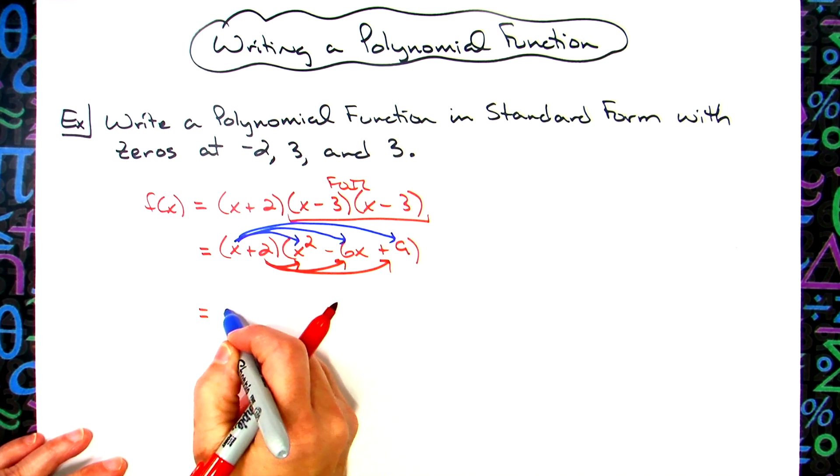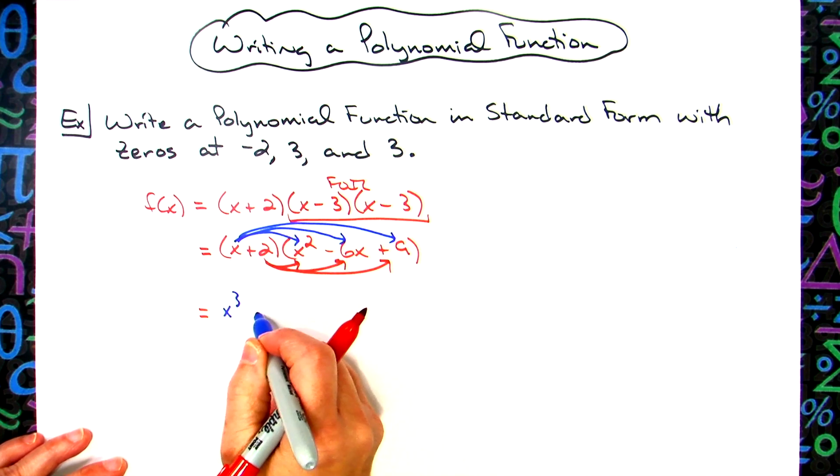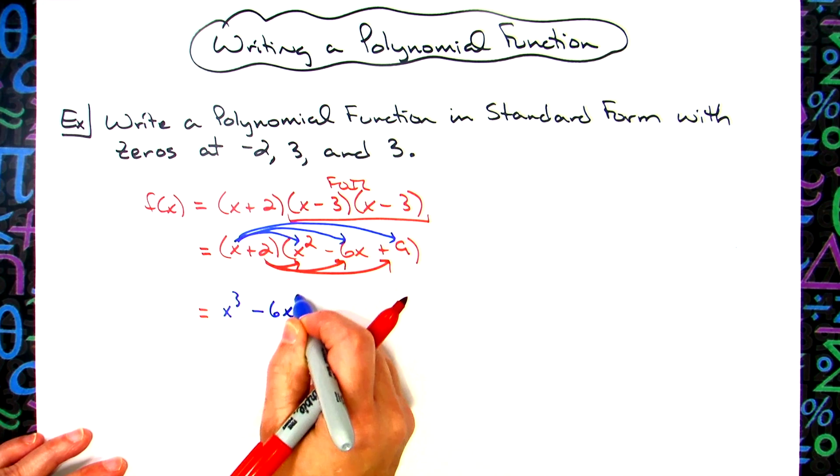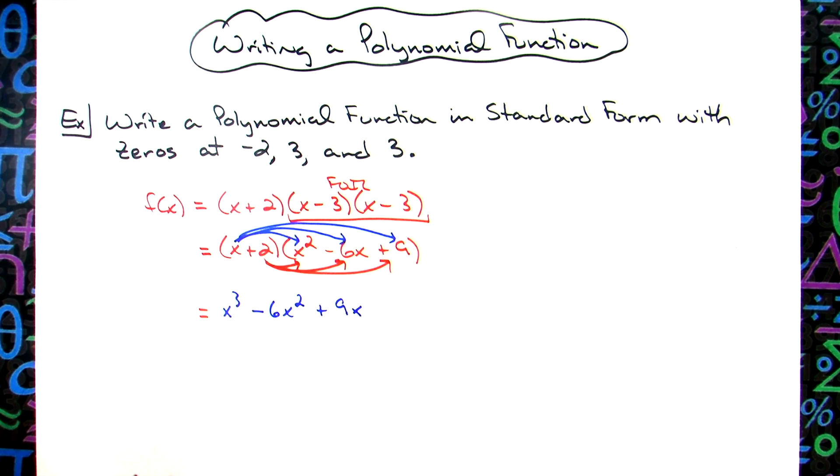x times x squared is going to be an x to the third. x times the negative six x will be a minus six x squared. x times the nine is going to be a plus nine x.